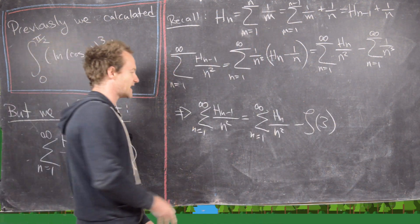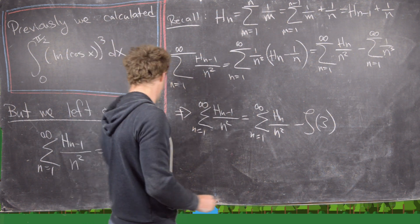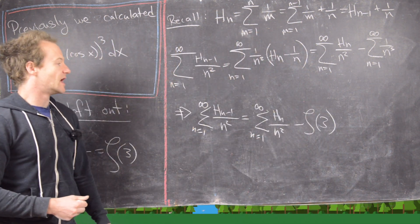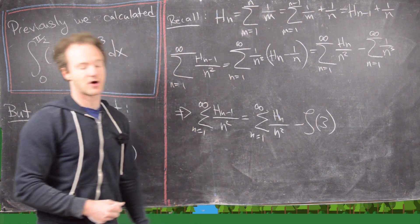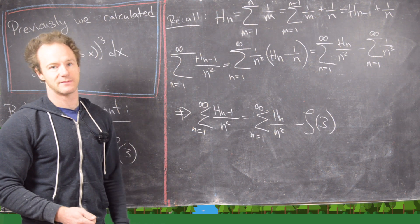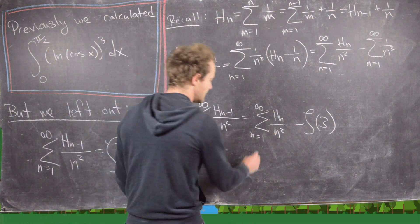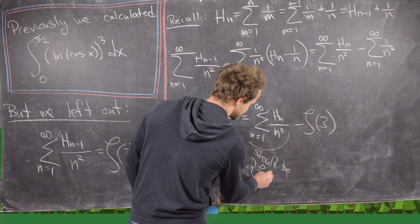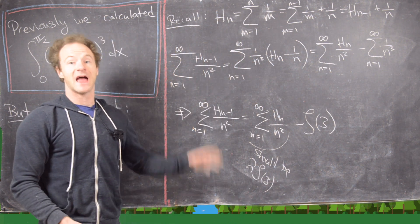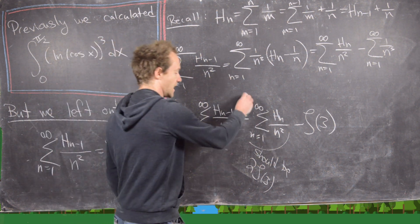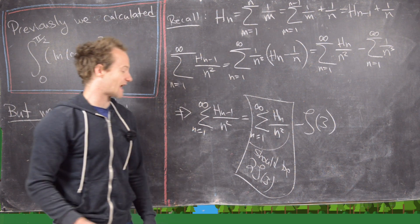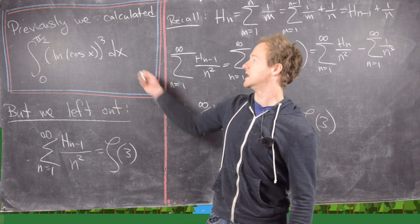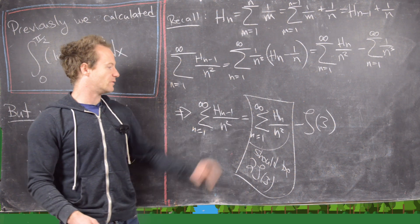So in order to find the left-hand sum — which is supposed to equal ζ(3) — we need to calculate the sum of the nth harmonic number over n², and then subtract ζ(3). By easy algebra, that means this value should be 2ζ(3). That's what we'll show for the rest of the video: the sum of H_n/n² equals 2ζ(3), which plugs the hole in our previous video.